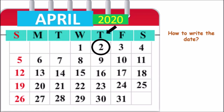Today is 2, so we will write here 2 dot. The month is April. And children, I asked you to remember the number written with April. Can you tell me what was the number? Yes, 4. Because April is the 4th month, so we will write 4 dot. 2 dot, 4 dot. And what is the year? Yes, the year is 2020. So we will write 2020. So the date is 2 dot, 4 dot, 2020.